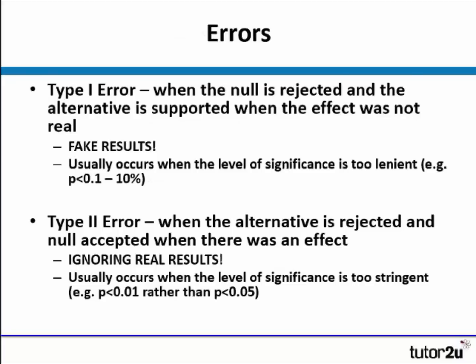In inferential statistics, as with everything, there can be errors. In psychology and the sciences, we refer to type 1 and type 2 errors. A type 1 error is where you reject the null and support the alternative when, in fact, you have not found a result — it's a false positive, essentially a fake result. This usually happens if your level of significance is too lenient, such as using a 10% probability threshold.